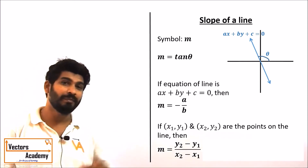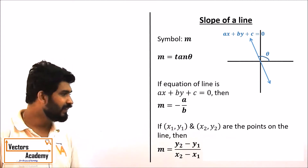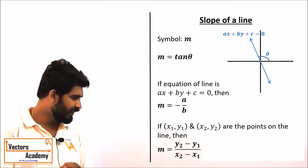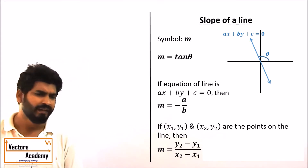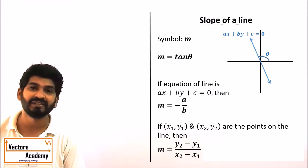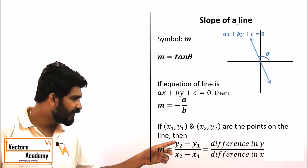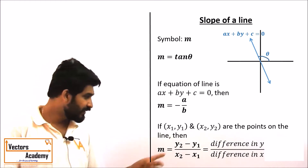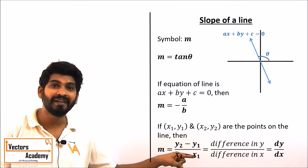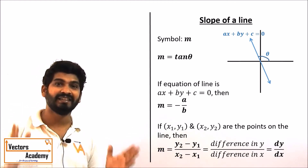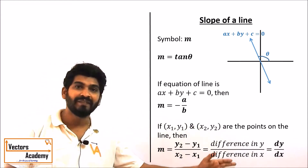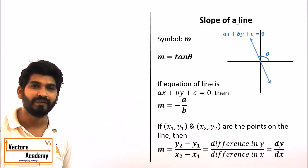The final slope formula is (y₂ − y₁)/(x₂ − x₁), where y₂ − y₁ is the difference in the y-coordinate and x₂ − x₁ is the difference in the x-coordinate. These differences can be represented as dy and dx respectively. So dy/dx — which is the derivative — is nothing but the slope of an equation.